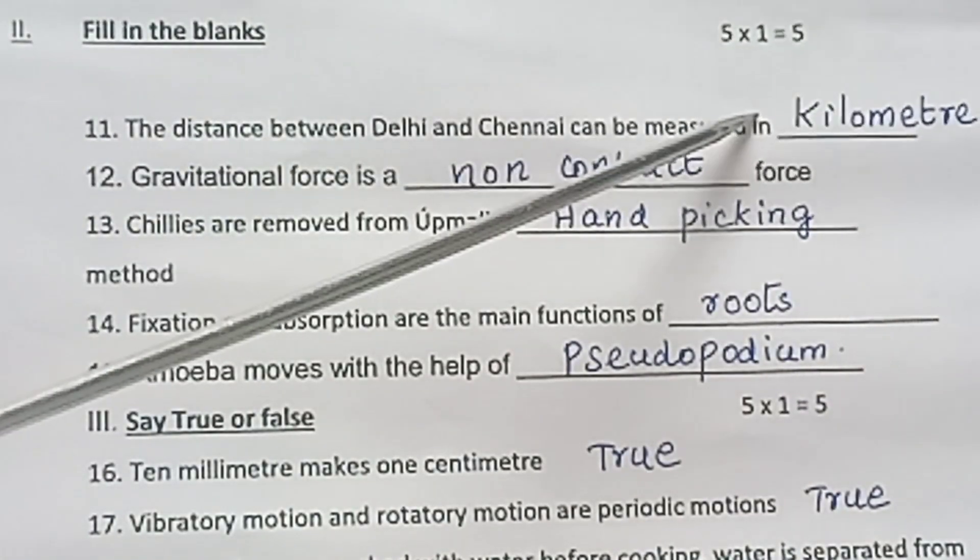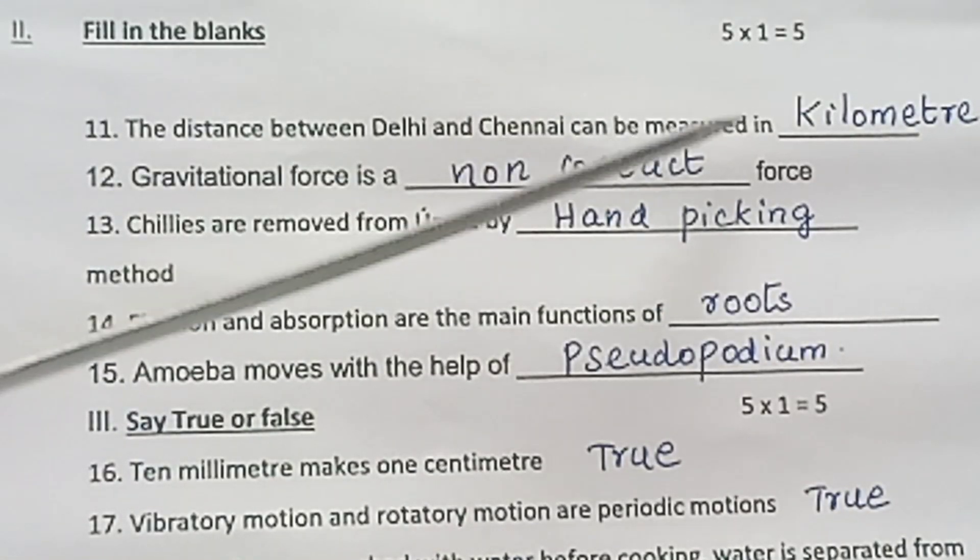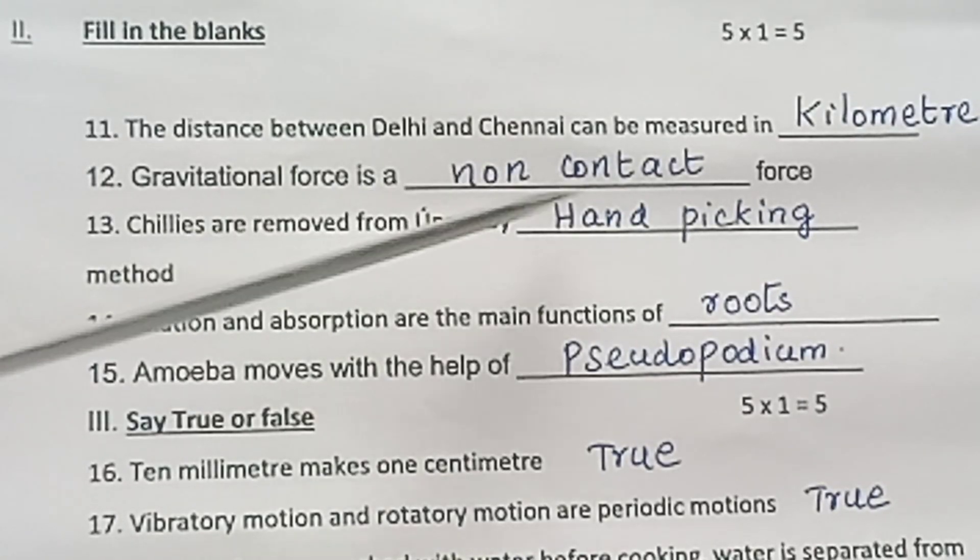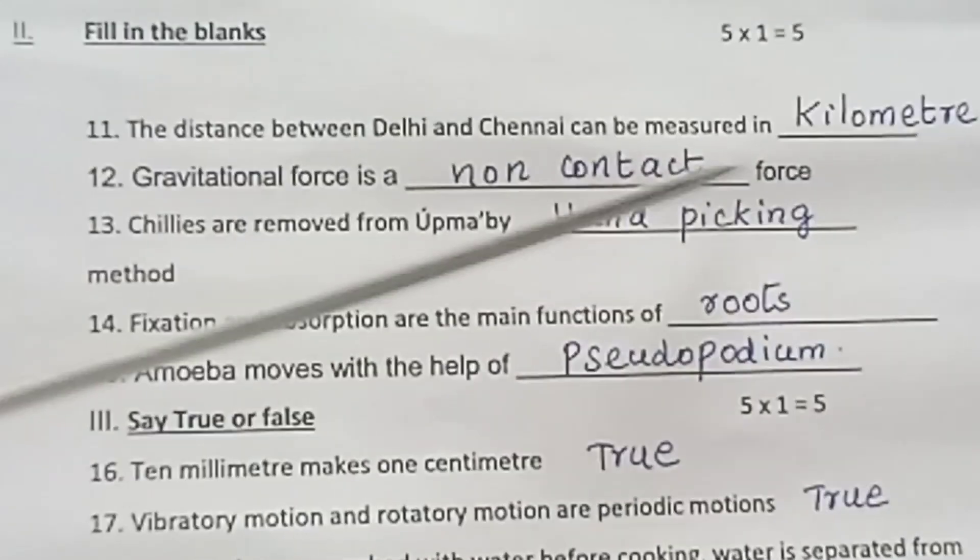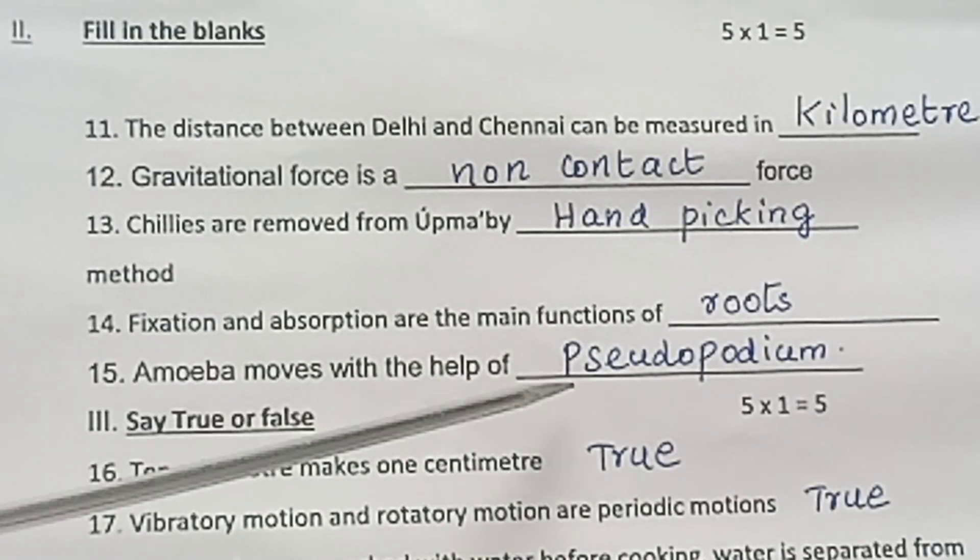Numeration 2. Fill in the blanks. 5 into 1 is equal to 5. The distance between Delhi and Chennai can be measured in kilometer. Gravitational force is a non-contact force. Chillies are removed from upma by hand picking method. Fixation and absorption are the main functions of roots. Amoeba moves with the help of pseudopodium.